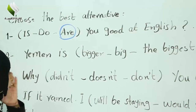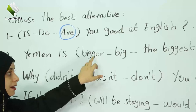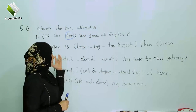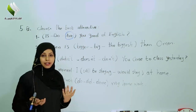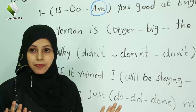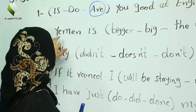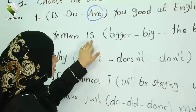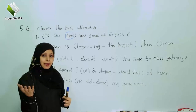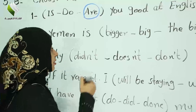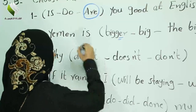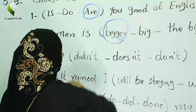Number two: big, bigger, or the biggest? 'Yemen is bigger than Oman.' This is a comparison between two things, so we use the comparative form and add '-er' to the adjective. The correct answer is 'bigger': Yemen is bigger than Oman.